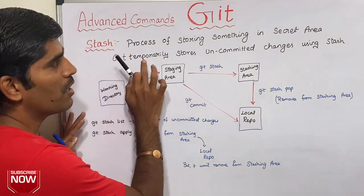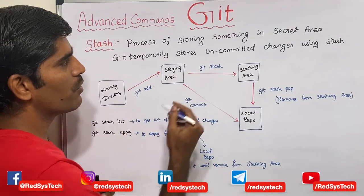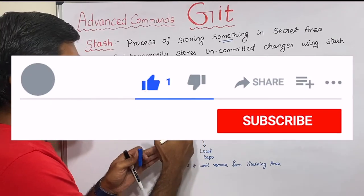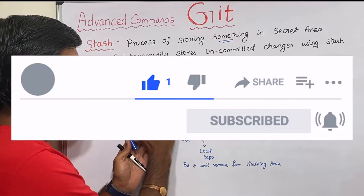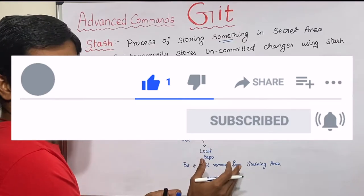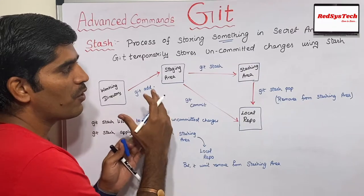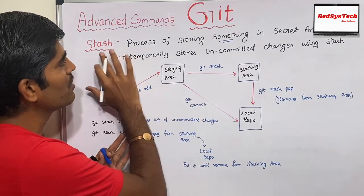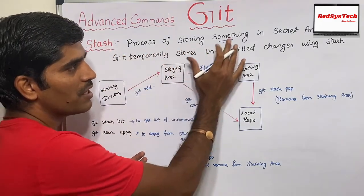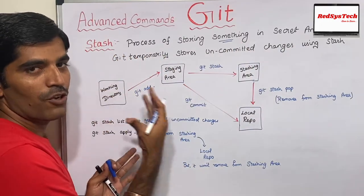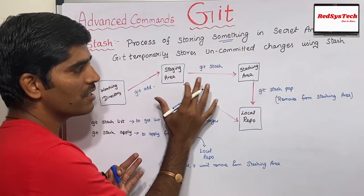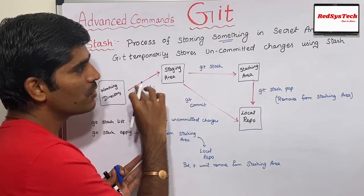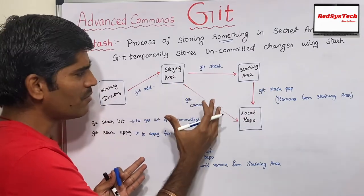Stashing is nothing but the process of storing something in a secret area. Whatever you create in your working directory, you store it in the staging area. If for some reason you don't commit it to the local repository but want to reuse it in future, you store it somewhere — that is stashing. Git temporarily stores the uncommitted changes from the staging area in this stashing area.